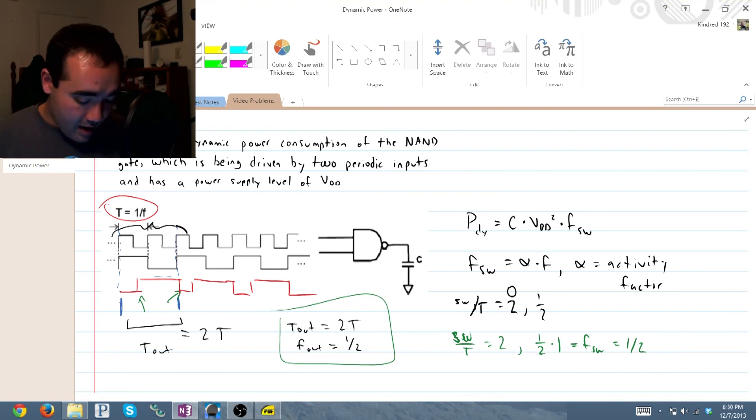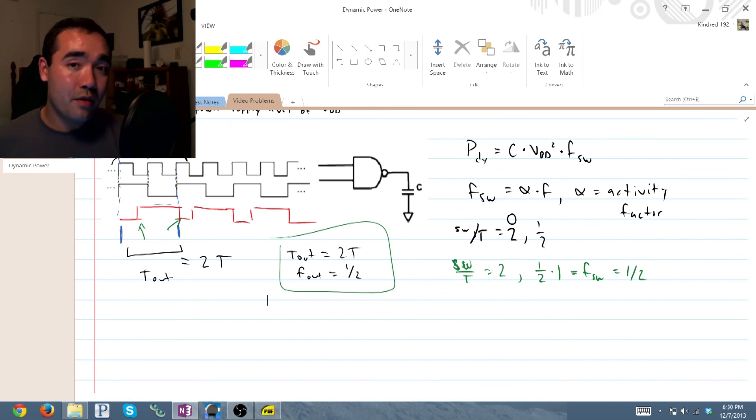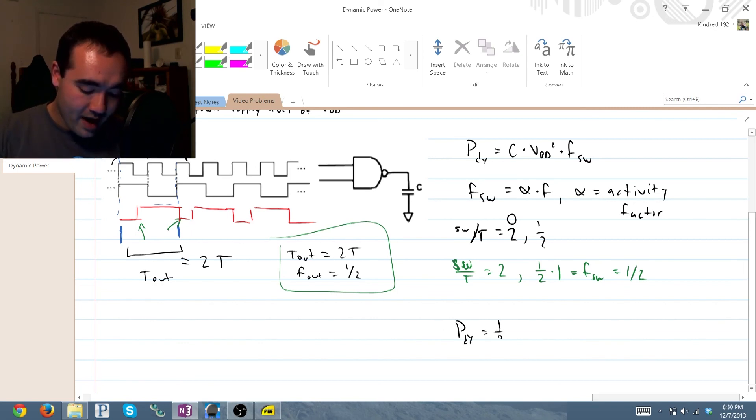So, that's really all there is to it. All you have to do is know that equation and know how to define or how to derive your switching frequency and then you end up in this case with a P dynamic of one half C times VDD squared.